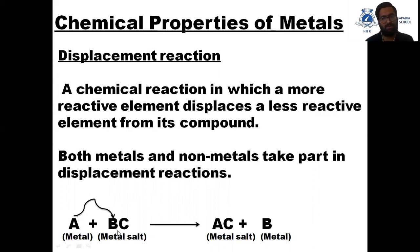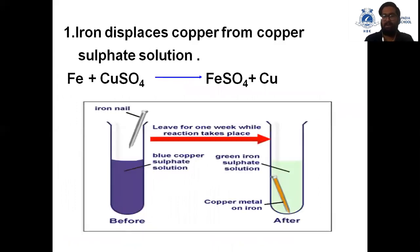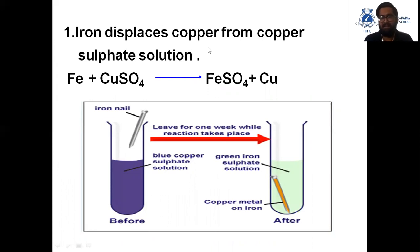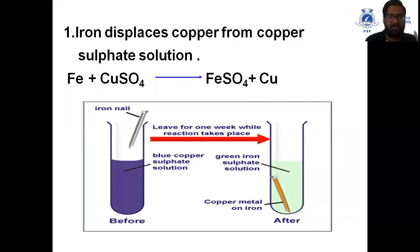Now we will study one example of a displacement reaction. Iron displaces copper from copper sulfate solution. When an iron nail is placed in copper sulfate solution, iron is more reactive than copper, so it displaces copper from its solution.